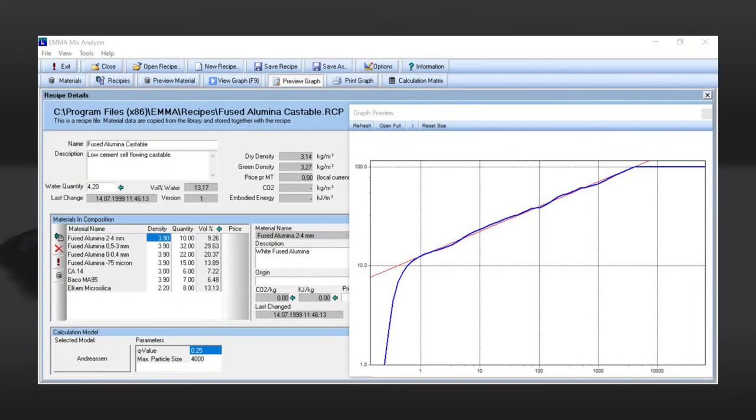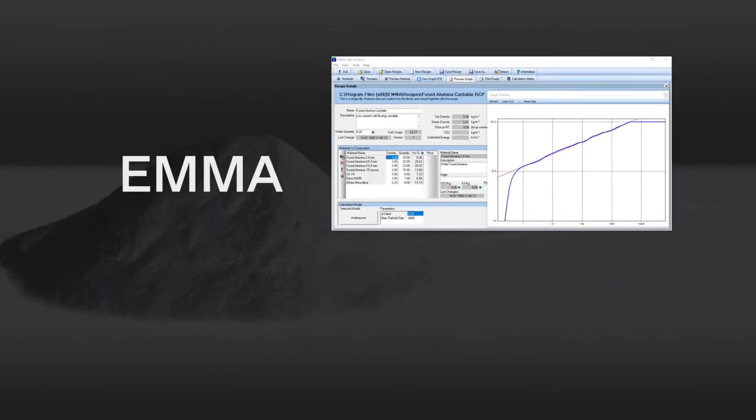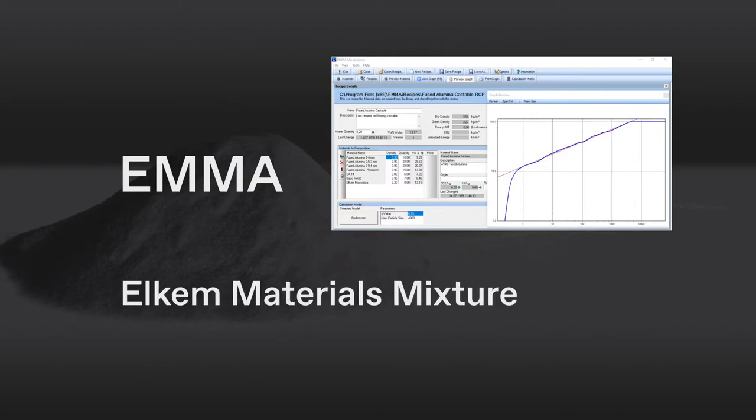To enhance the design of refractory castables, Elkem has developed a software package to calculate particle size distribution of castable mixes based on the Andreessen distribution. This software is called EMMA, which is the acronym for Elkem Materials Mixture Analyzer.